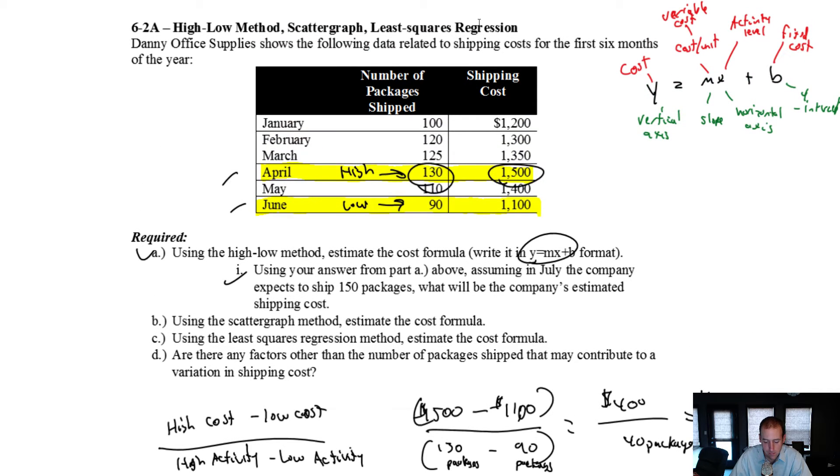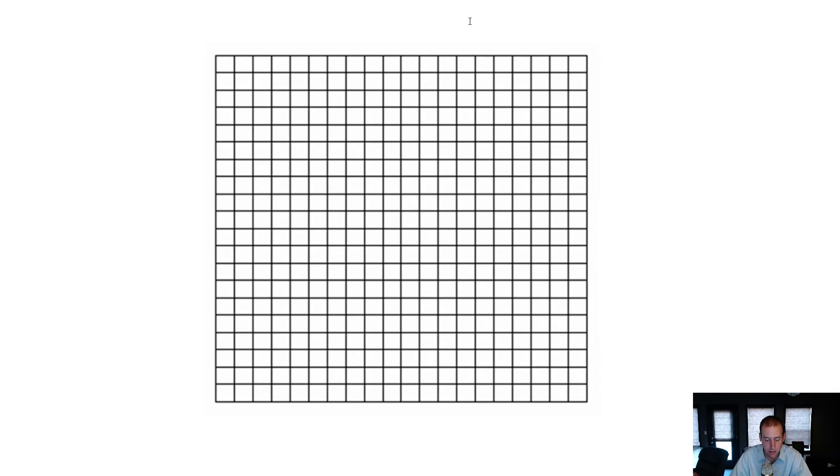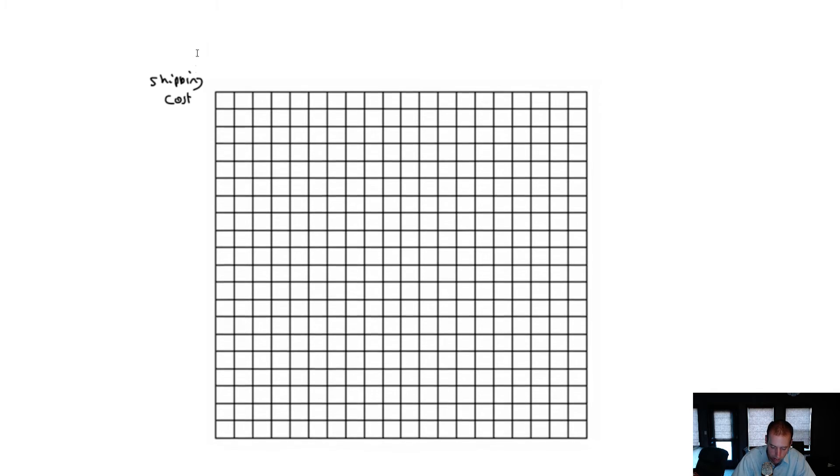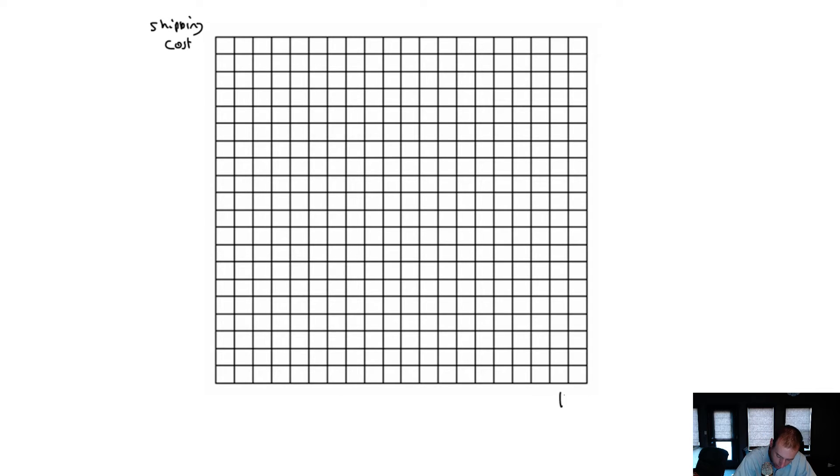We just want to graph this data. Remember, the y-axis is always going to be our cost—in this case it's our shipping cost—and the x-axis is going to be our activity level, which in this case is the number of packages shipped.